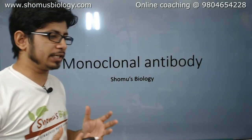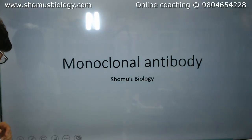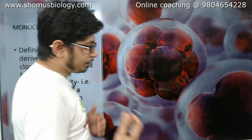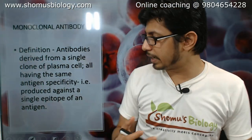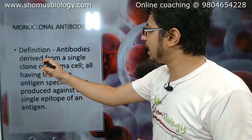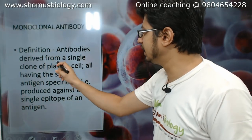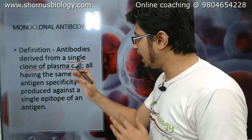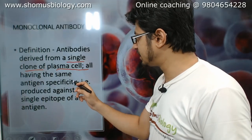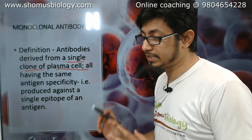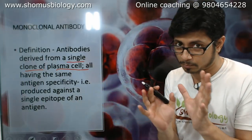The very first thing is: what is a monoclonal antibody? The definition of monoclonal antibody is, in very simple terms, antibodies derived from a single clone of plasma cell, all having the same antigenic specificity. That means they will be produced against a single epitope of an antigen and will be termed as a monoclonal antibody.